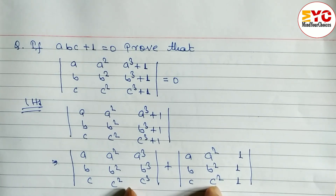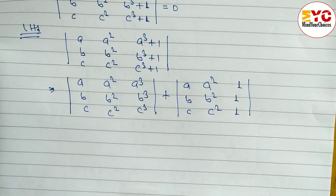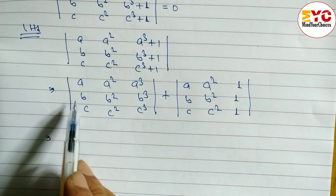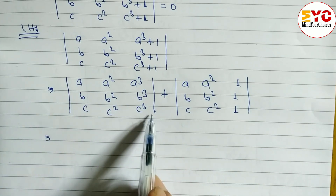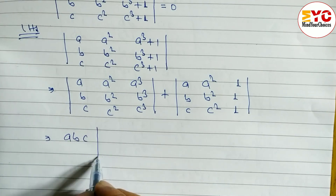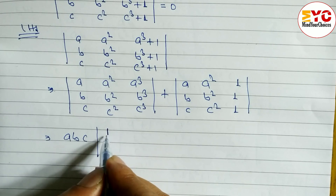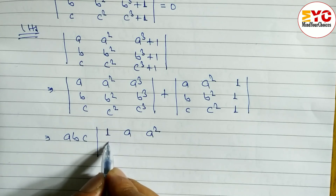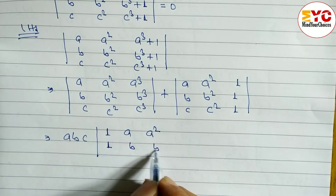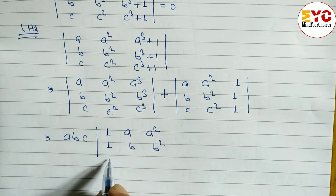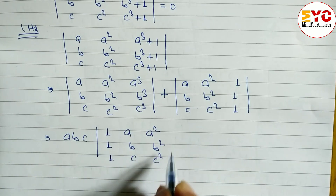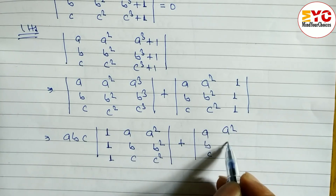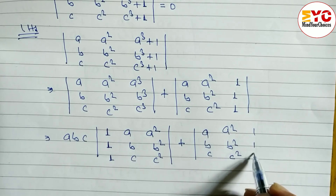Now from the first matrix, we can take a common from the first row, b common from the second row, and c common from the third row. After factoring out abc, what remains is: 1, a, a squared in the first row; 1, b, b squared in the second row; 1, c, c squared in the third row. Plus the second matrix: a, b, c; a squared, b squared, c squared; 1, 1, 1.